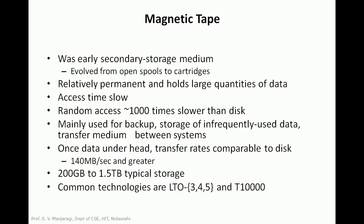Now let us move on to magnetic tape. Magnetic tapes are older compared to magnetic disks. They store data permanently and hold a large amount of data compared to magnetic disks, but their access time is very slow — their random access time is 1000 times slower than disks. They are mainly used for backup purposes, where data is not used frequently. The data transfer rate is 140 MBps and the size of magnetic tape ranges from 200 GB to 1.5 TB.